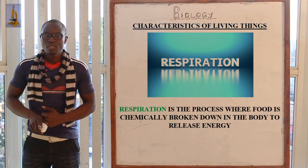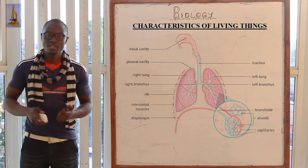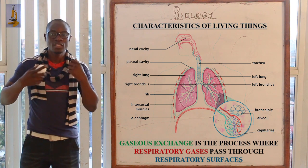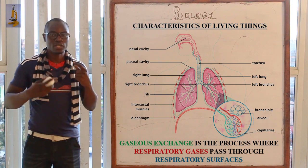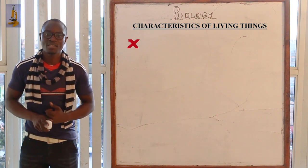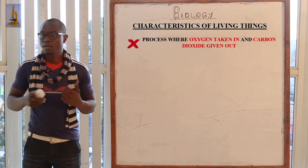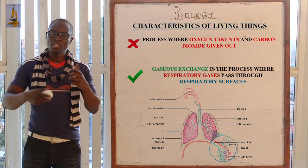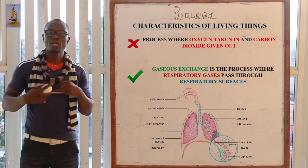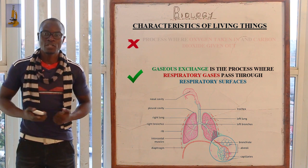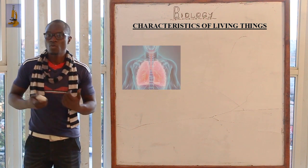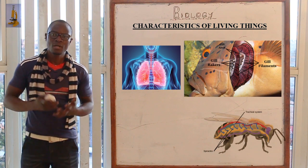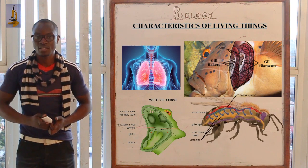We also have gaseous exchange, which is the process whereby respiratory gases pass through a respiratory surface. Never define it as simply 'the process where oxygen is taken in and carbon dioxide is released' — you must specify respiratory gases passing through respiratory surfaces, such as the lungs in mammals, gills in fish, the tracheal system, and the buccal cavity.